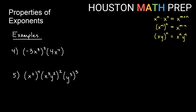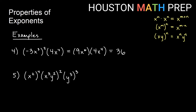Next example: negative 3x cubed all squared, times 4x to the fourth. First, square the parenthetical piece — apply the square to each factor: negative 3 times negative 3 gives 9, and x cubed times x cubed gives x to the sixth. Then multiply by 4x to the fourth: 9 times 4 is 36, and x to the sixth times x to the fourth adds exponents to give x to the tenth. Final answer: 36x to the tenth.